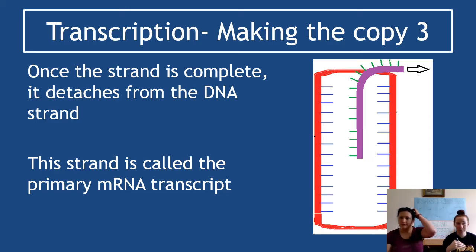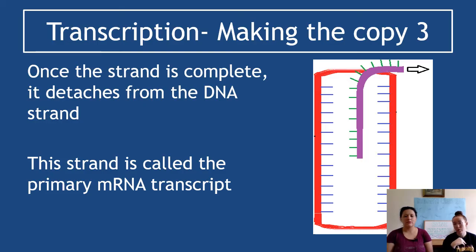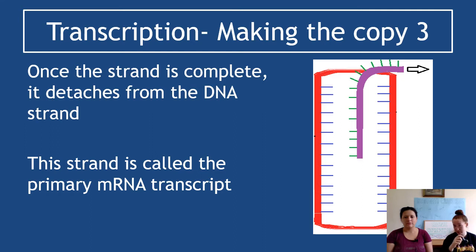Once the whole gene has been copied and the mRNA bases have been joined together by RNA polymerase, the mRNA strand is complete. It detaches from the DNA strand and travels towards the ribosome. Importantly, at this stage it is called the primary mRNA transcript — this isn't the final mRNA that goes to the ribosome; it has copied the gene but is not quite ready yet.